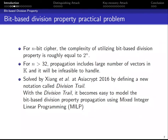For an n-bit block cipher, the time and memory complexity to compute the bit-based division property through the block cipher components are roughly 2 to the power of n. So for block ciphers with block size greater than 32, it will be infeasible to handle this propagation directly. This problem was solved by Xiang et al. at AsiaCrypt 2016 by defining a new notation called the division trail. Using the division trail, finding integral characteristics via the bit-based division property can be automated using techniques such as MILP and SAT solvers. We will use MILP in our attack.